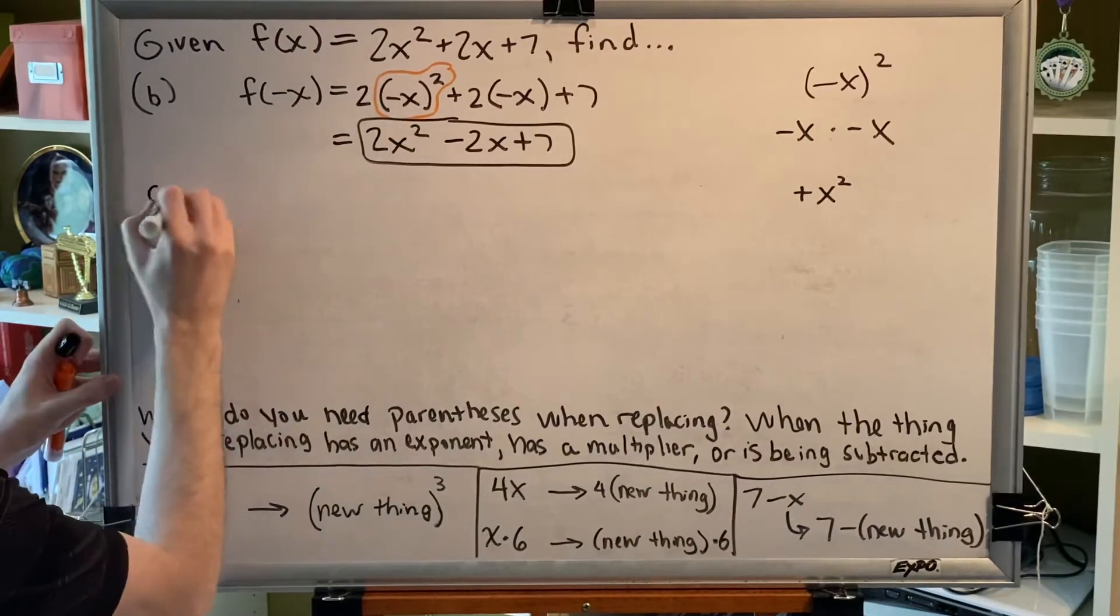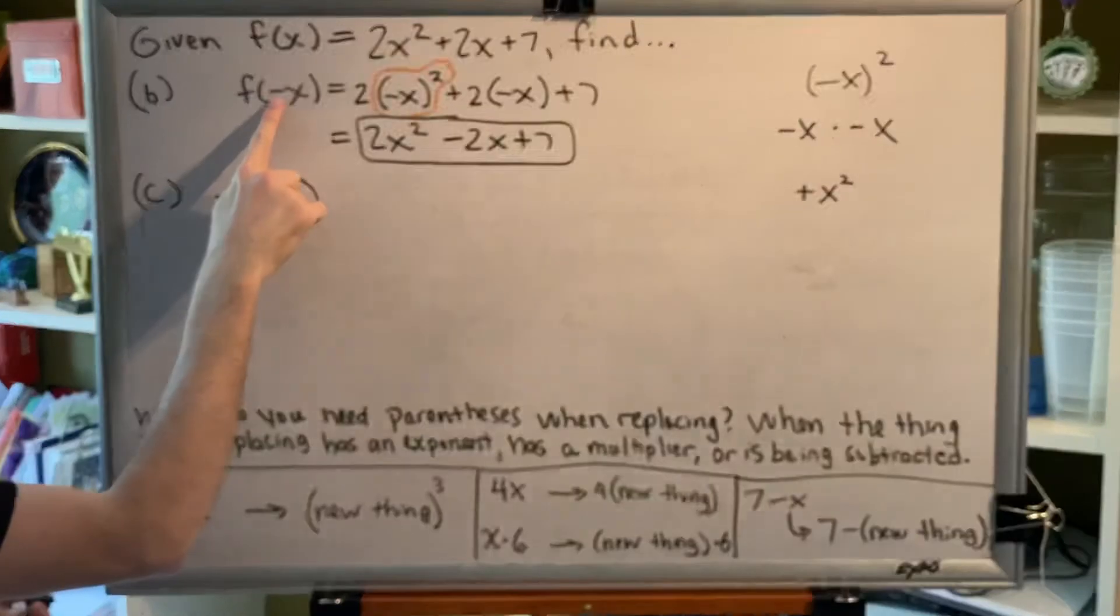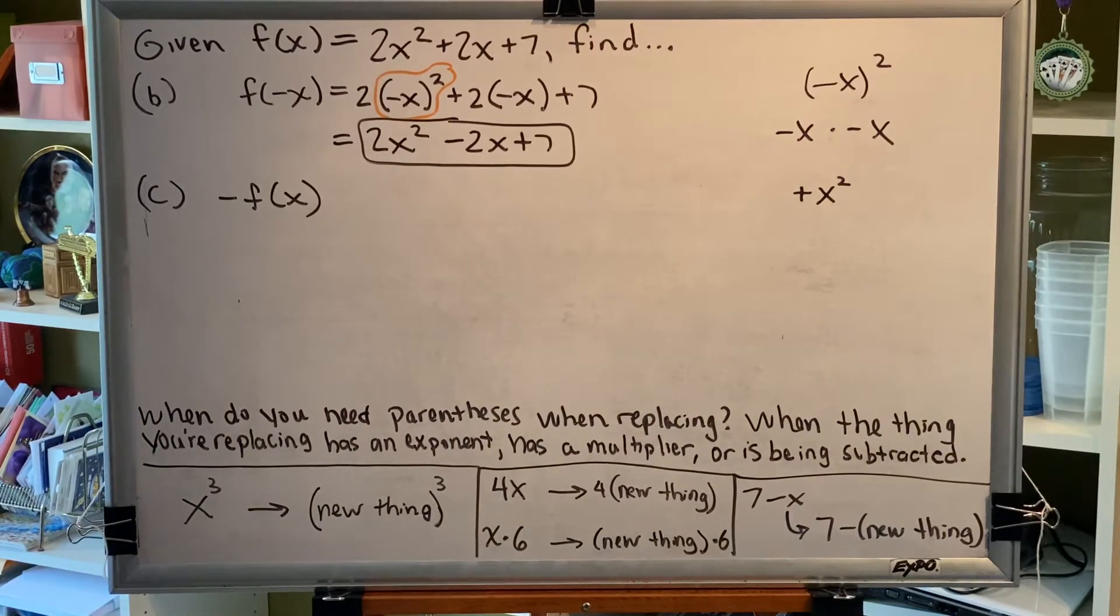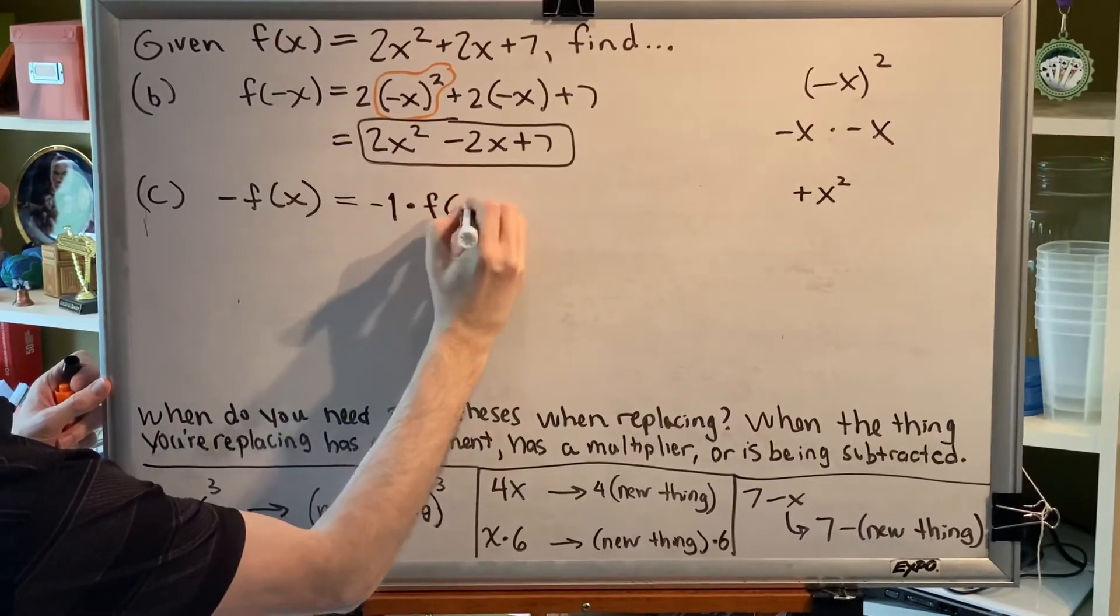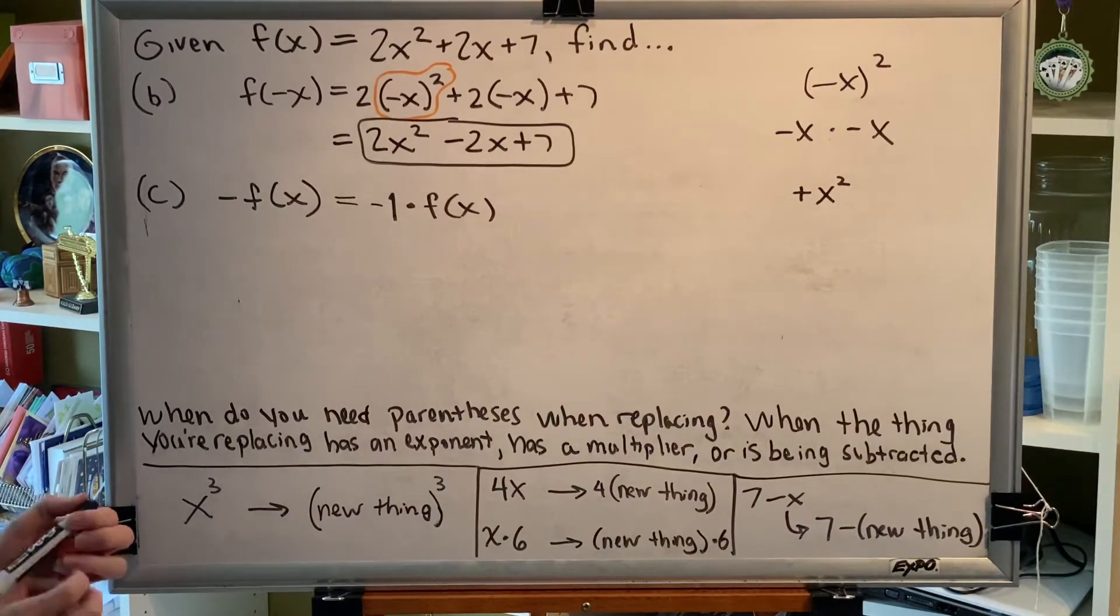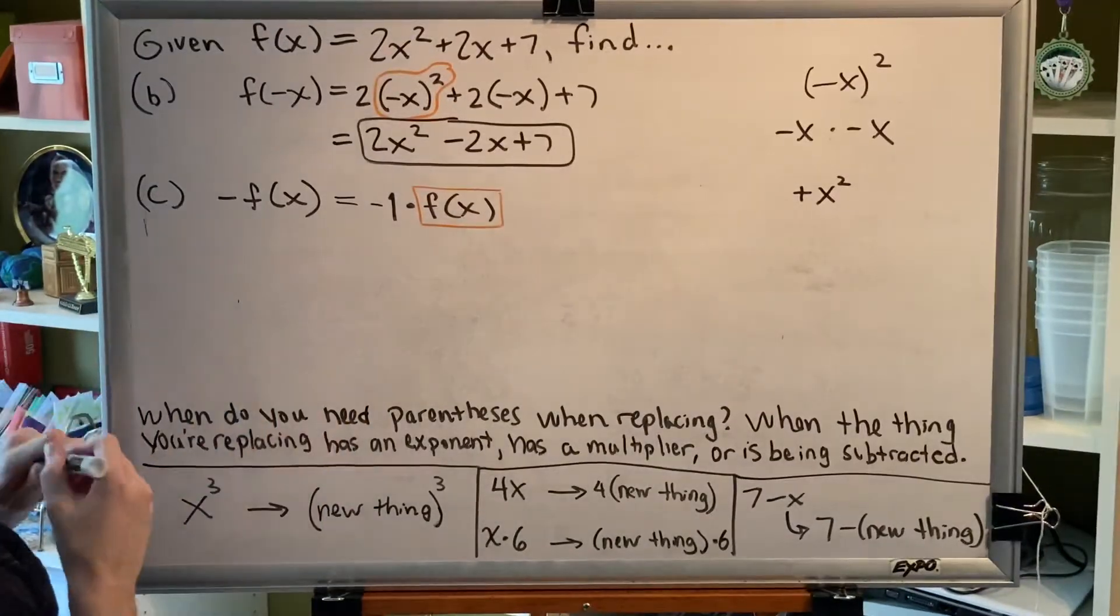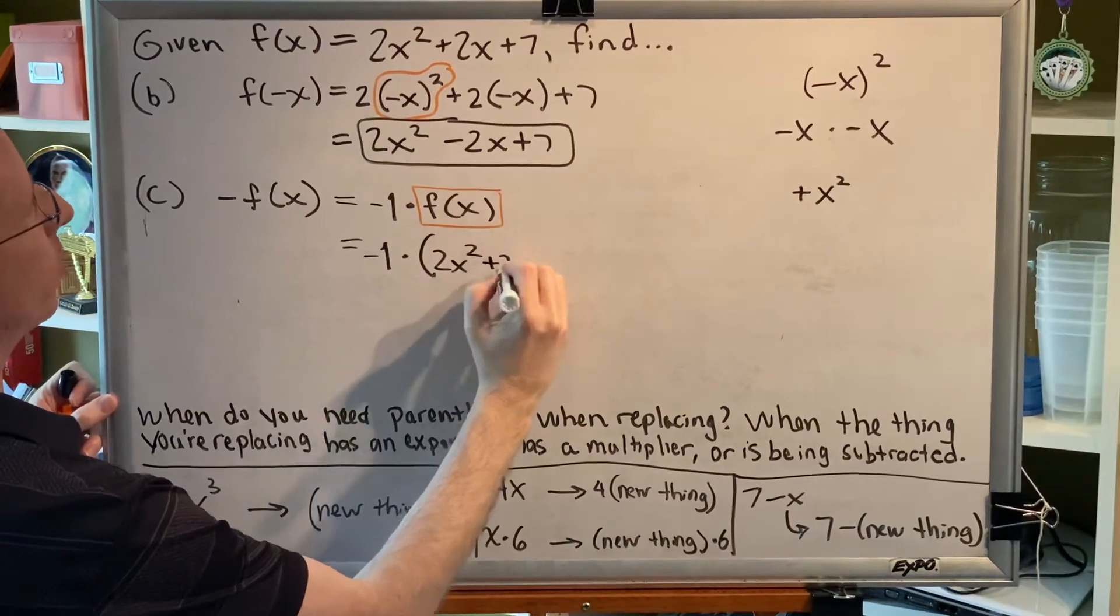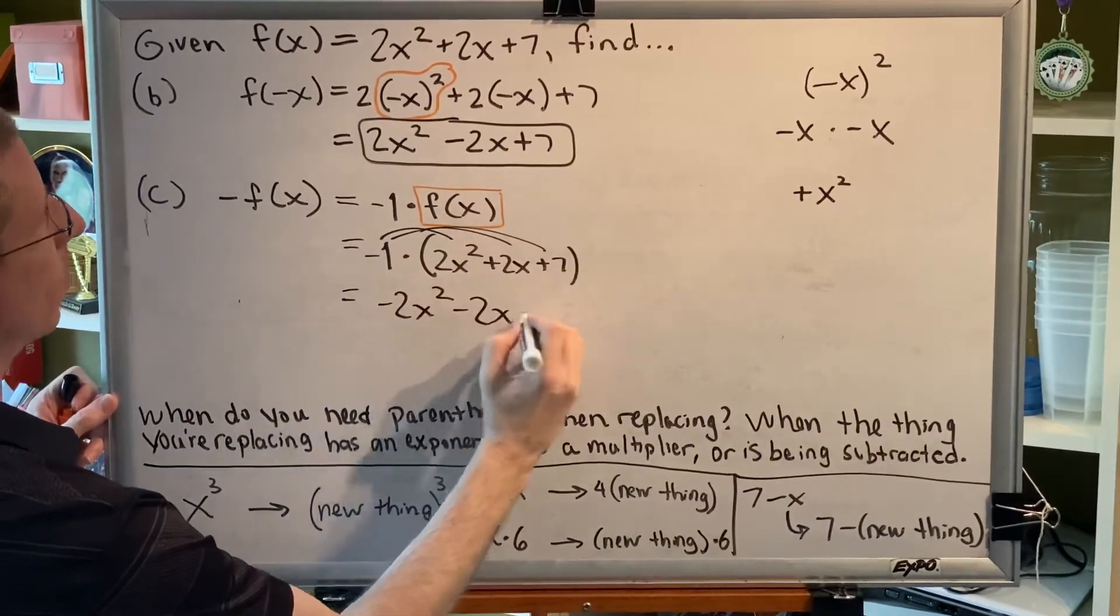Alright, let's do part C. Part C asks us to find -f(x). And I'd like you to notice something here. In part B, the negative is inside the parentheses near the x. But in part C, the negative is outside the parentheses, far from x. So that means that these two problems are going to give us a different answer. Remember that a negative in math is a mathematical shortcut for -1 times. So what we're really being asked to find in this problem is -1 times f(x). So we're going to replace the entire function with what it equals in the problem. And because it has a multiplier, we're going to put it in parentheses. So we'll get -1 times (2x² + 2x + 7). Distribute the negative, and we get -2x² - 2x - 7.